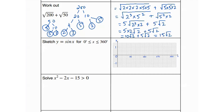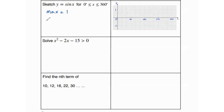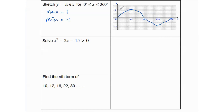In a sine function, the maximum value is 1 and the minimum value is negative 1. The sine function always begins from 0. It equals 0 at x equals 0°, 180°, and 360°; it equals 1 at x equals 90°; and it equals negative 1 at x equals 270°.